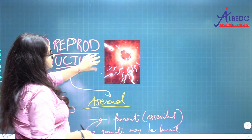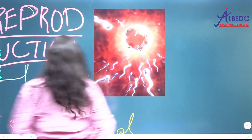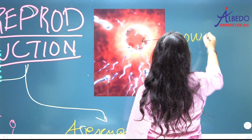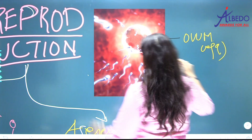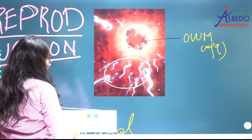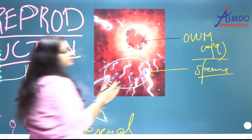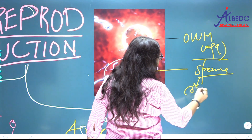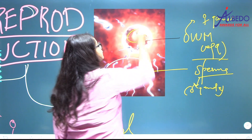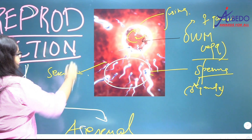This is the picture of sexual reproduction in humans. Here this is your ovum — ovum means egg — which is the female gamete. And all these are your sperms, or spermatozoa, which are the male gamete. These sperms are the male gamete, and ovum is the female gamete, and these two are fusing. This is what is your sexual reproduction.